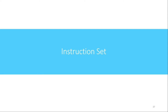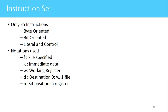In this video we'll see the instruction set in PIC16F877. There are only 35 instructions and all these instructions are of one word. One word in case of PIC16F877 is 14 bits, so every instruction is represented using only 14 bits. Some instructions are byte oriented, meaning they operate on an entire byte. Some are bit oriented, operating on individual bits. Some are literal and control instructions.